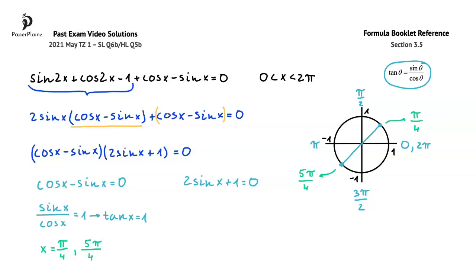Next, we'll work with the other equation, so 2sin x + 1 = 0. Rearranging, we get sin x = -1/2. Remember that sin x is the y-coordinate of the points on the unit circle, so sin x = -1/2 at this position and at this position. In the first position, the angle is 7π/6, and in the second position, it is 11π/6.